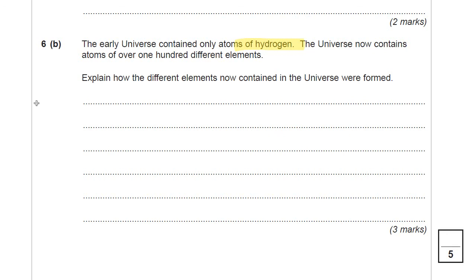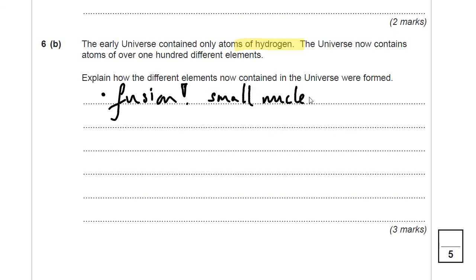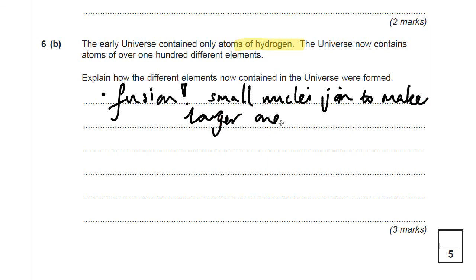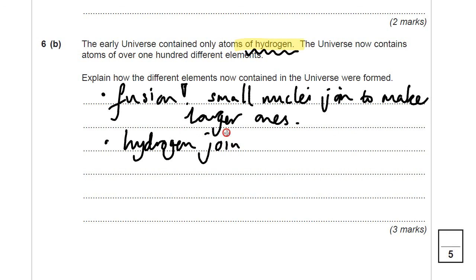Pause the video now and have a little go. Hopefully every single one of you has got one mark because you've just put fusion. New nuclei are formed by fusion. Maybe you want to write it as smaller nuclei — the definition of fusion is small nuclei join to make larger ones. Now, remember it said it started with hydrogen — I highlighted that as the one key bit there. So you need to mention that hydrogen joined to make helium. That must have been the first process.